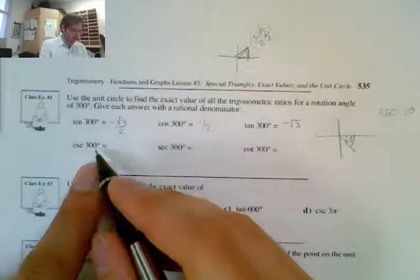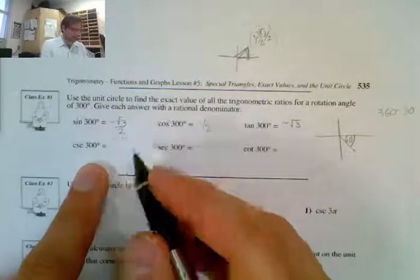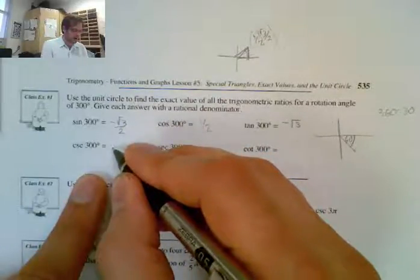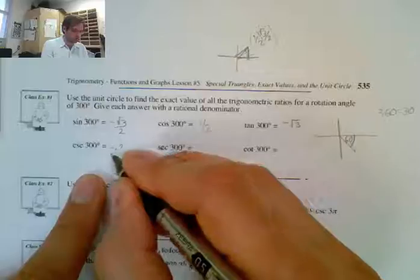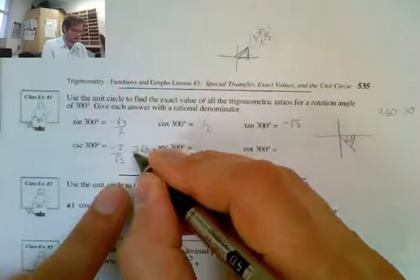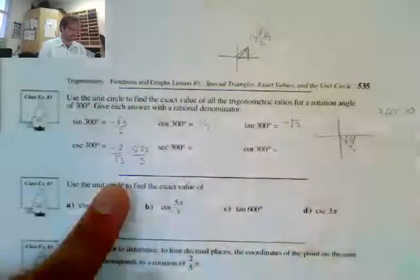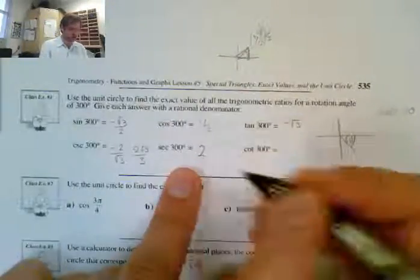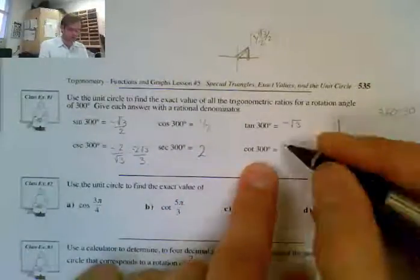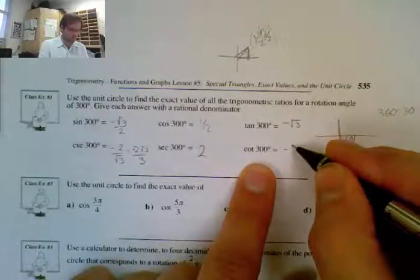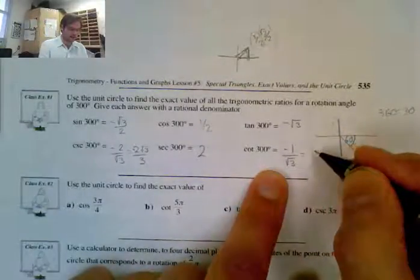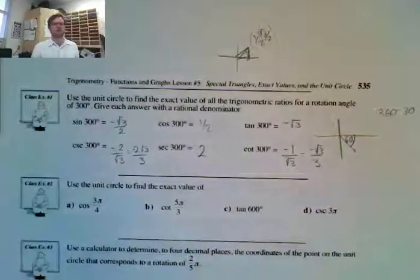Cosecant 300° is the reciprocal of sin, so that's 1/(−√3/2) = −2/√3, which is the same as −2√3 over 3. Secant 300° is the reciprocal of cos, which is just 2. Cotangent 300° is the reciprocal of tangent, so it's −1/√3, which is the same as −√3 over 3 once rationalized.